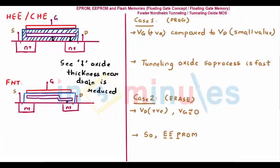EEPROM — Electrically Erasable Programmable Read-Only Memory — operates on a phenomenon called Fowler-Nordheim tunneling. Like EPROM, it has a floating gate, but with a slight variation. In the channel hot electron injection used in EPROM, the floating gate traps charge due to the hot electron effect, increasing the threshold voltage to be greater than VDD.